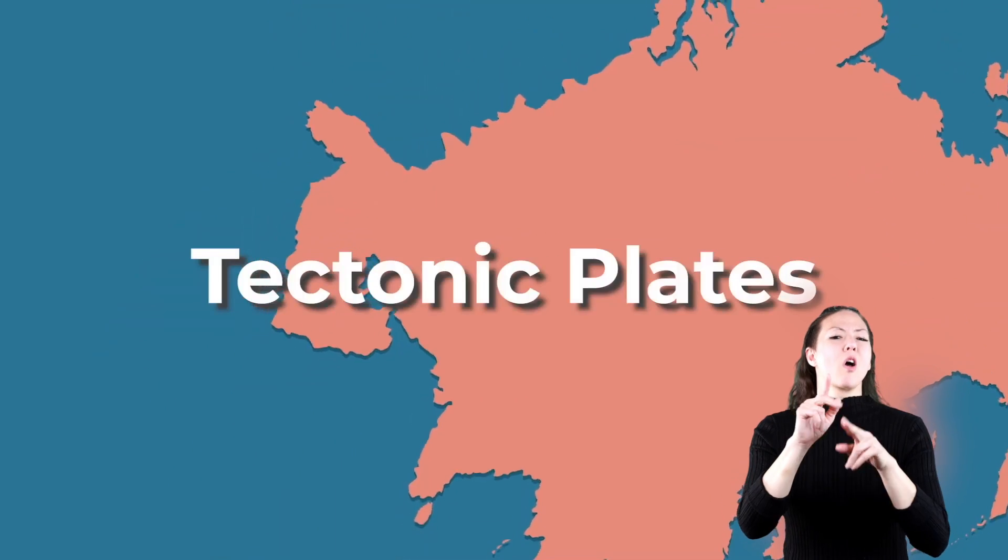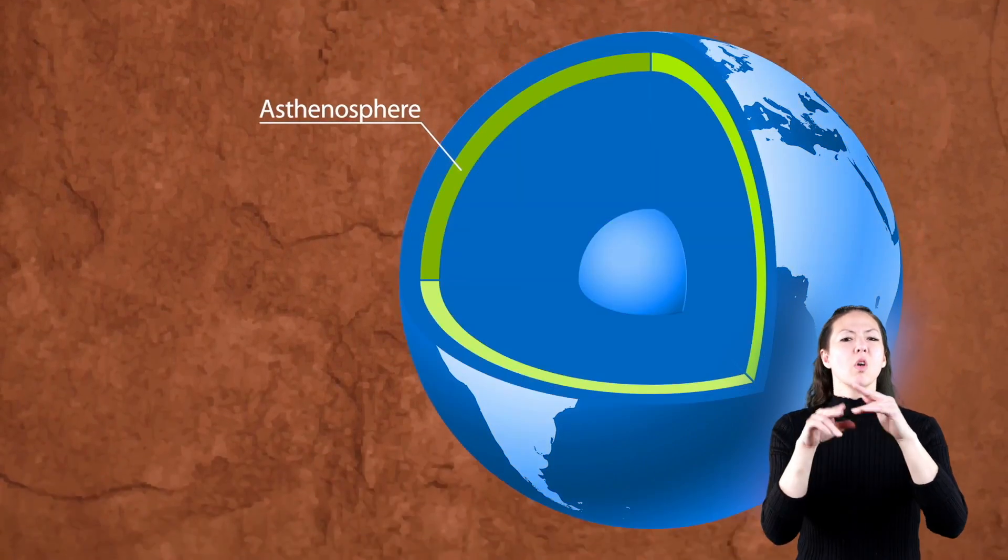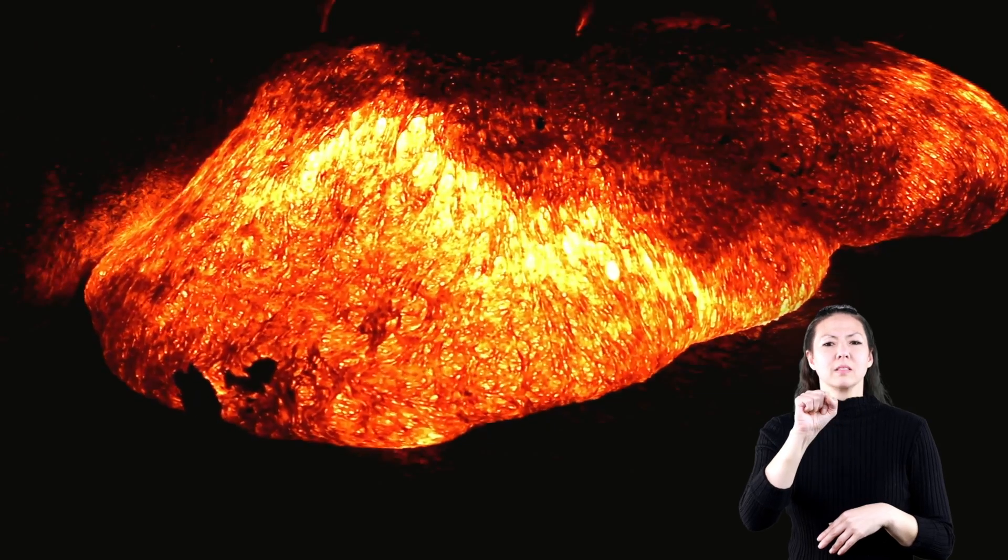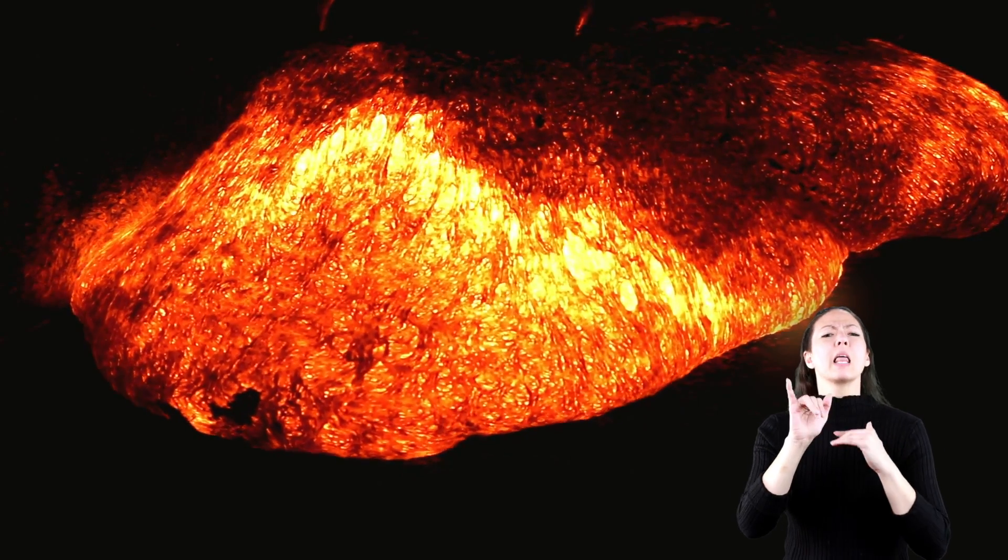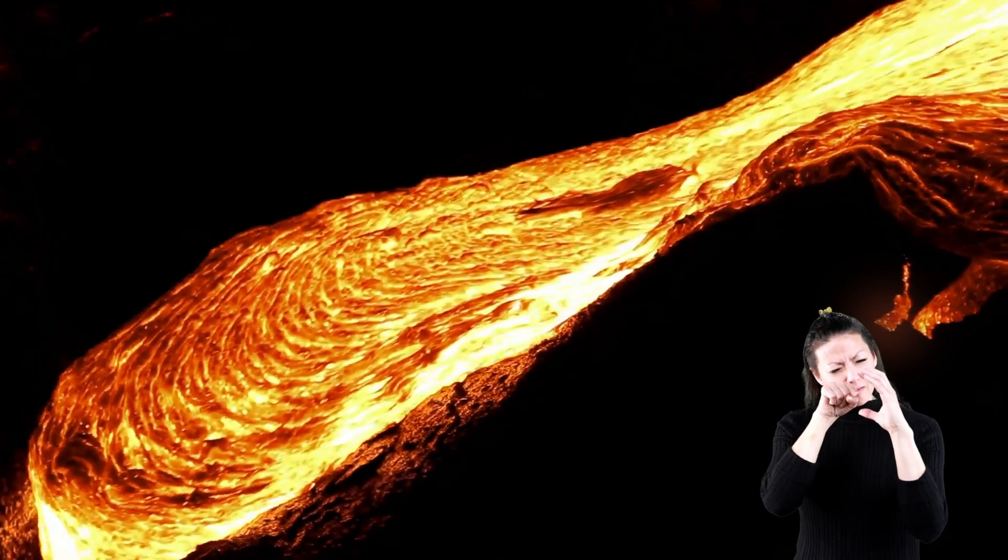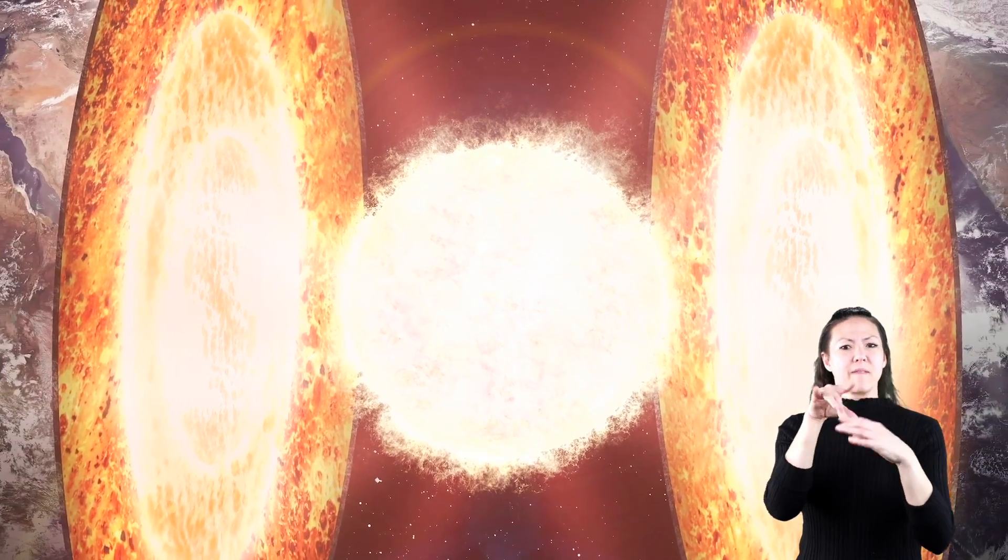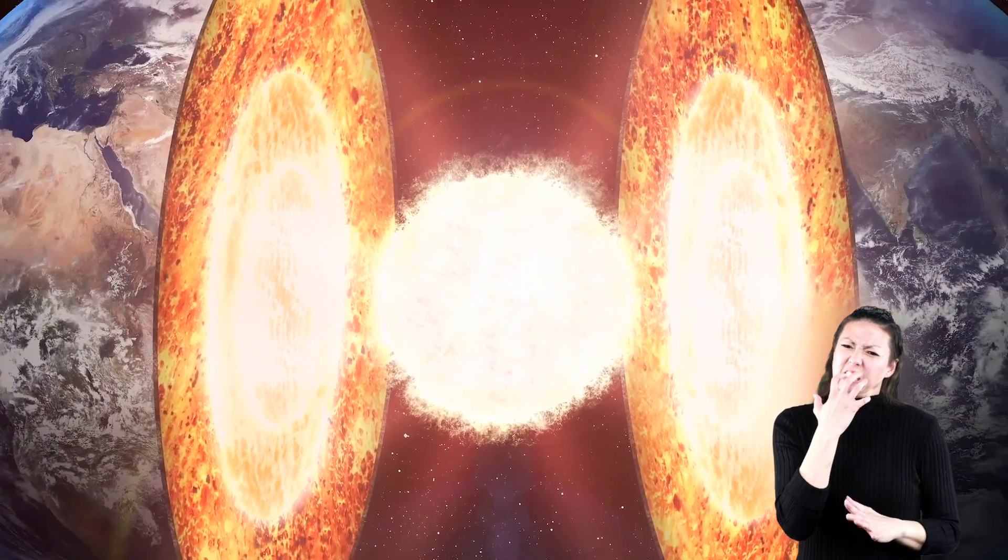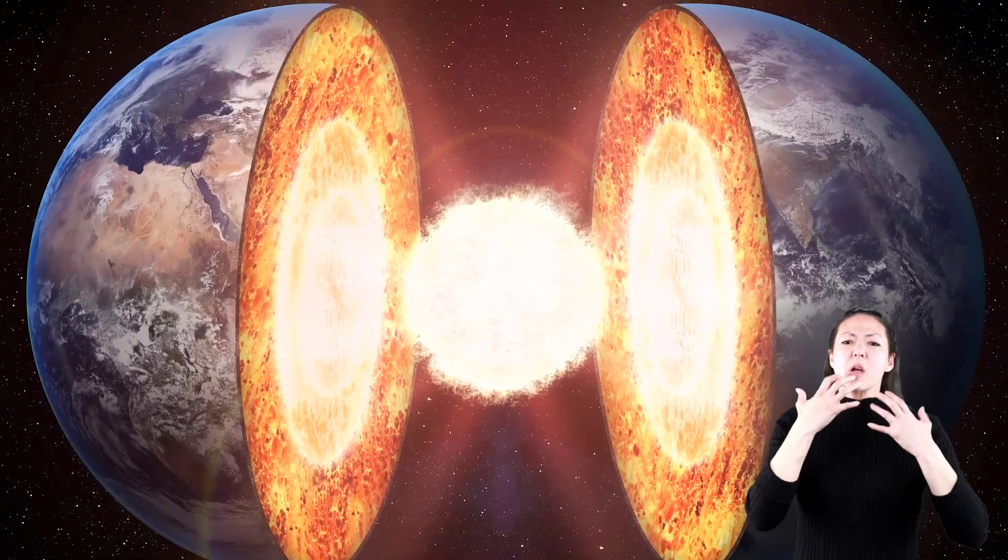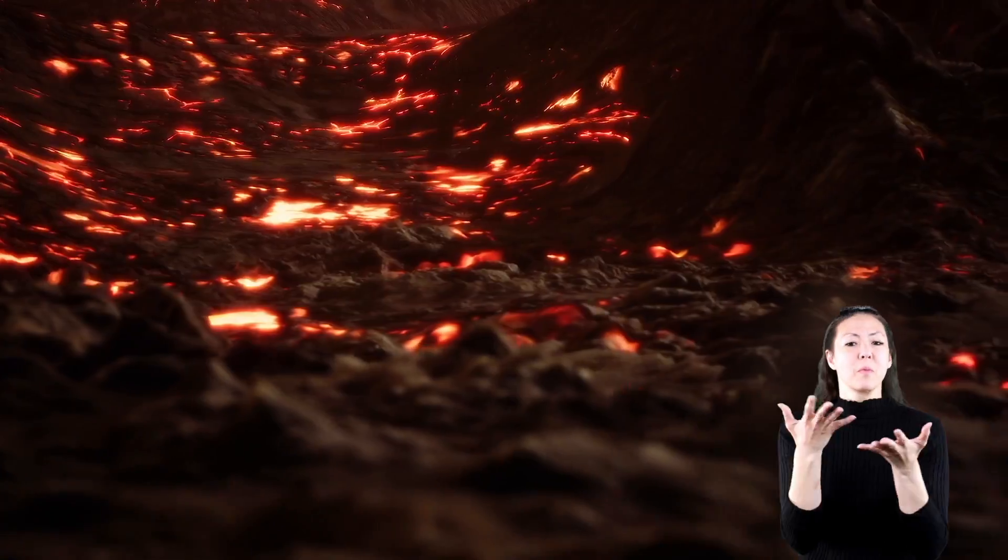They move because below them is a layer called the asthenosphere. The asthenosphere layer is basically liquid-like molten rock that moves around deep, deep below the earth's surface and is all squishy like lava. The rock is molten because the center of the earth itself is really, really hot and radiates that heat upwards. So the tectonic plates are sitting on top of that molten rock in the asthenosphere.